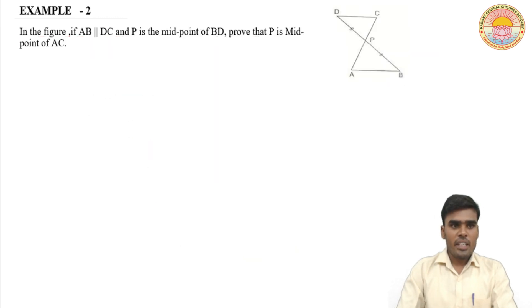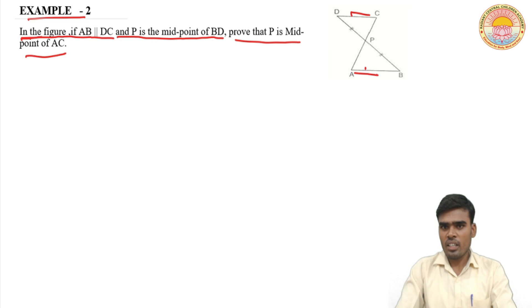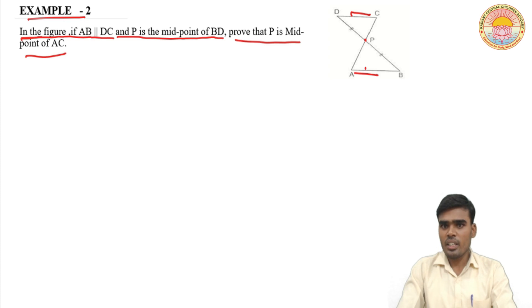Now example number two: In the figure, if AB is parallel to CD and P is the midpoint of BD, prove that P is the midpoint of AC. AB parallel है CD के, और P is midpoint of BD — it means DP is equal to BP. और हमको prove करना है कि P is also the midpoint of AC, यानी AP is equal to CP।